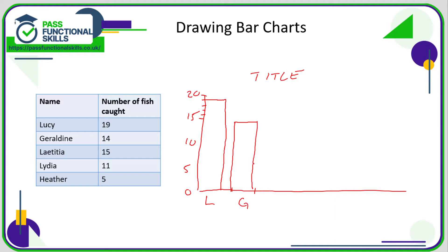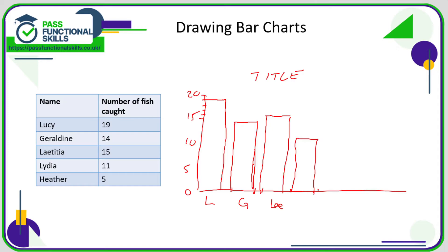Pencil and ruler is much better. Leave a gap that's the same as the gap between Lucy and Geraldine, between Geraldine and Leticia — Leticia goes up to 15. Note how all the bars are similar width; they should be identical. A similar gap between Leticia and Lydia — Lydia goes up to 11, just beyond the 10. Same width as all the other bars. Another gap the same size, and Heather goes up to 5.